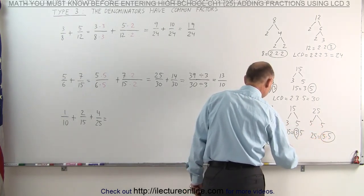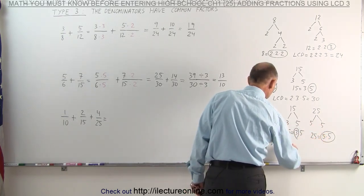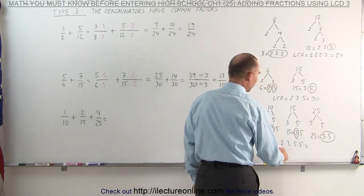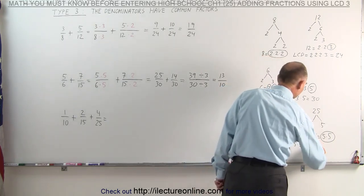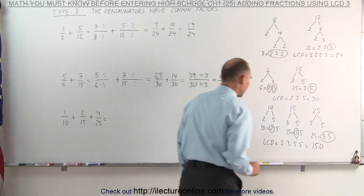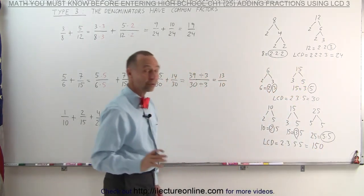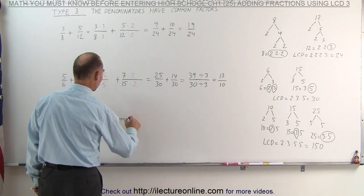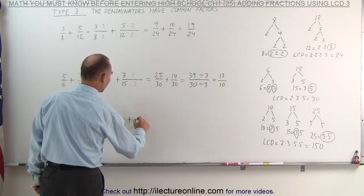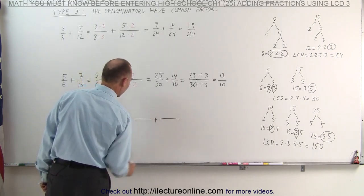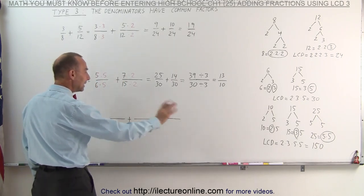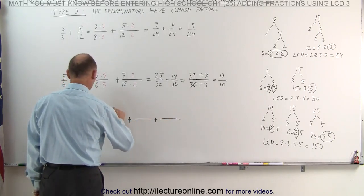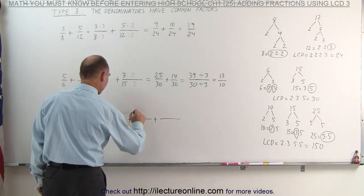Now let's circle each of the prime factors that occurs the most. The number 2 occurs in the factorization of 10, the number 3 occurs in the factorization of 15, and the number 5 occurs twice in the factorization of 25, so I'll circle those two. The LCD is equal to the product of all the circled prime factors: 2 times 3 times 5 times 5, which equals 150.